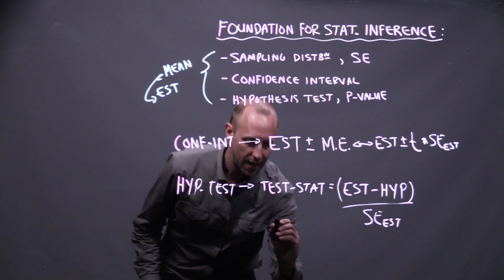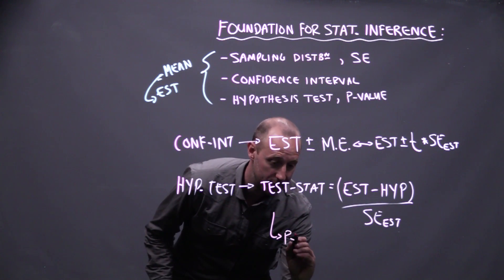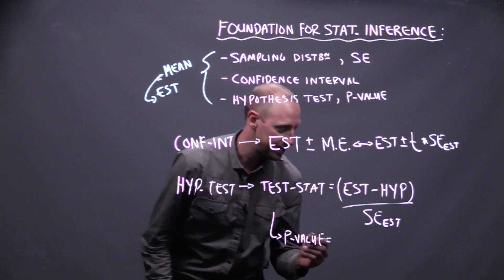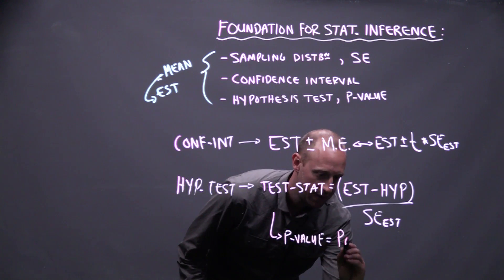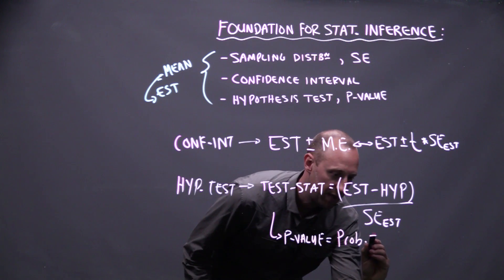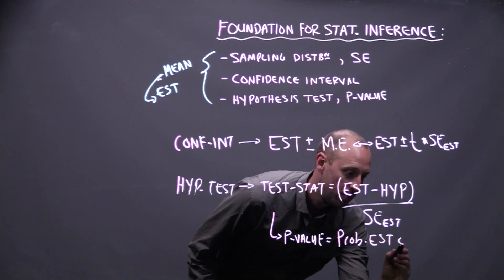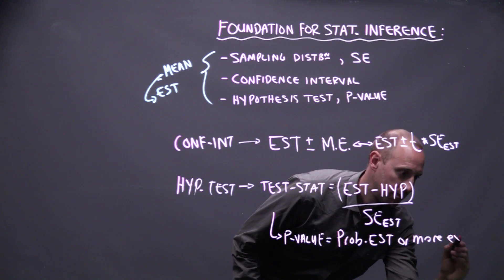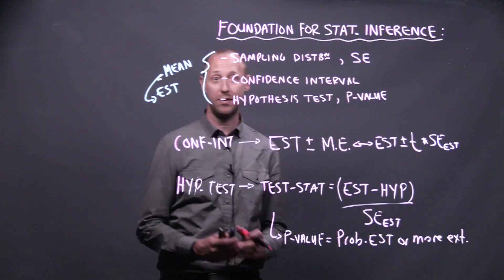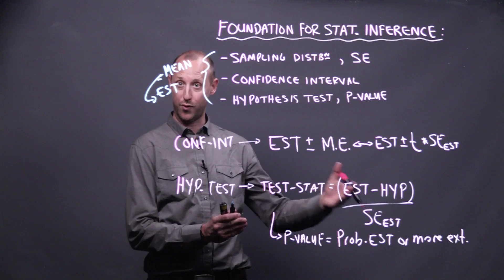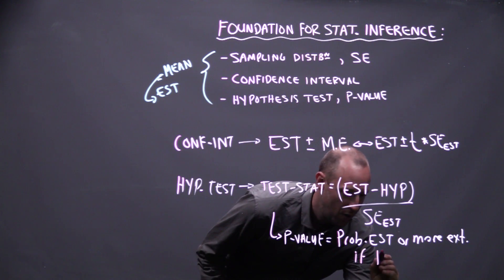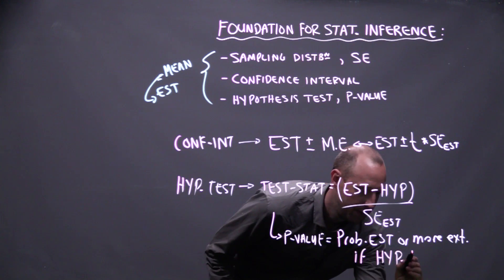And then this helped us get at the concept of calculating a p-value, which, to summarize it simply, it helped get us the probability of getting our estimate, or one more extreme. And by more extreme, I mean one as far from the null or further, if the null hypothesis is true.